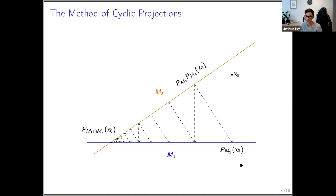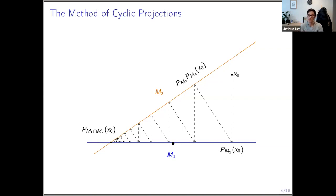You can see a couple of things from this picture. First, the composition of projectors starting from x-naught always has the same nearest point in the intersection, even when the intersection is not unique. Second, if the angle between these two sets is very small, I'm going to zigzag many more times to get to the intersection; if the angle is large, fewer zigzags are needed. This suggests the rate of convergence depends on the angle between the subspaces.